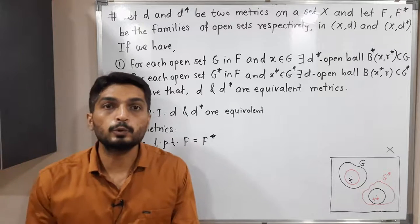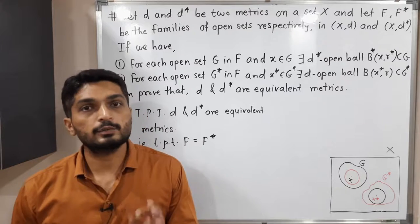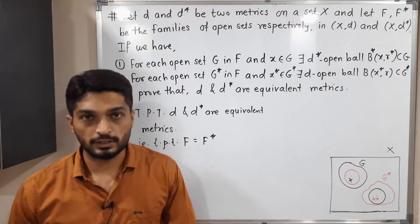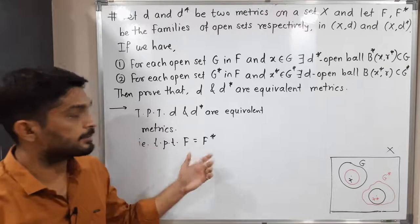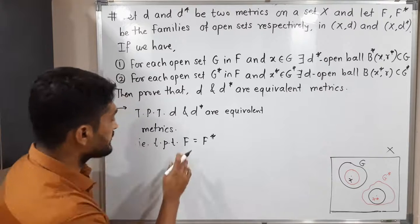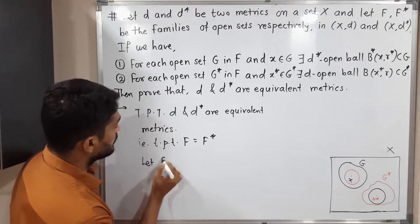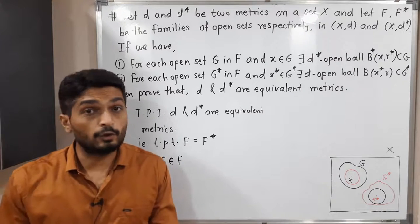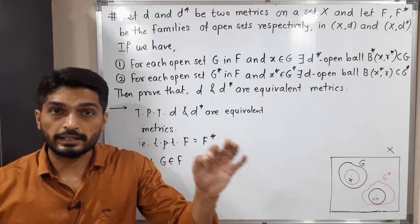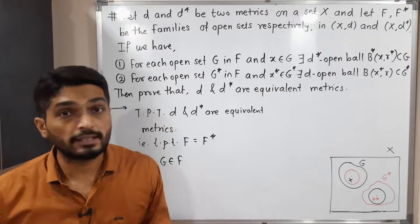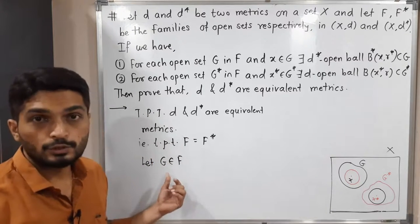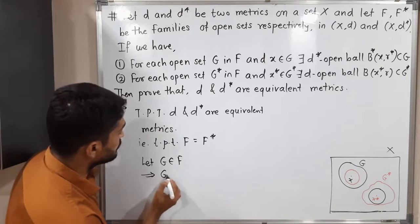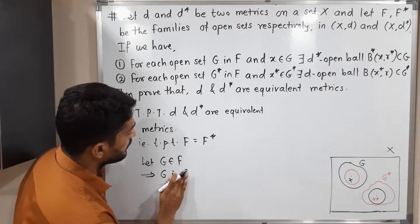The technique is very simple: first we prove the first set is a subset of the second, and then we prove the second set is a subset of the first. So my first target is to prove F is a subset of F*. Let us take one arbitrary element from F. Let G belong to F. Since F is a family of D-open sets, G is a D-open set and a member of F.